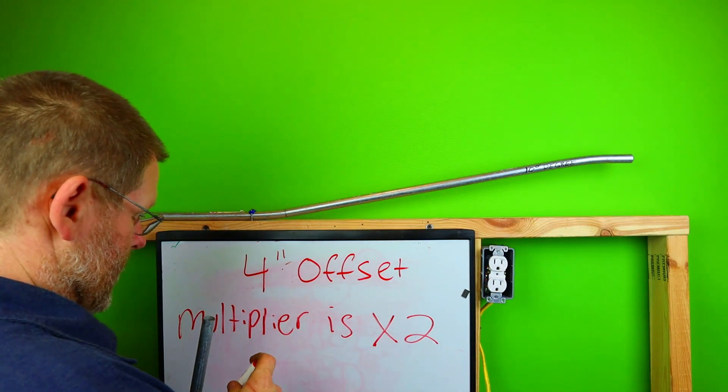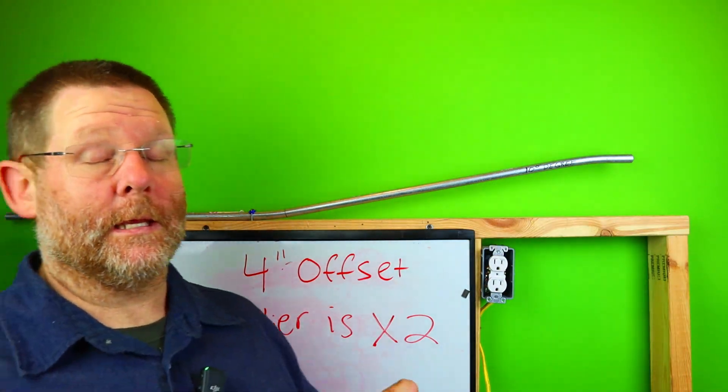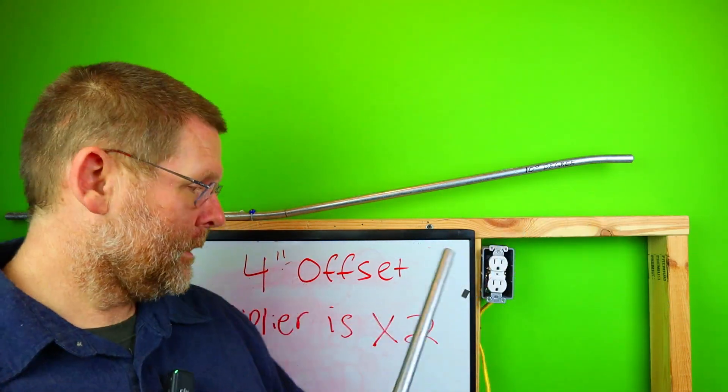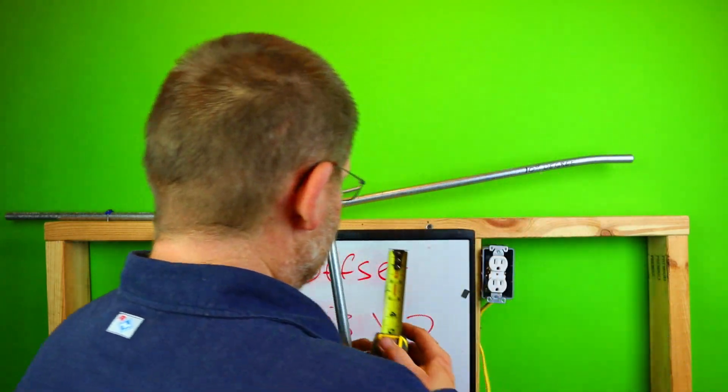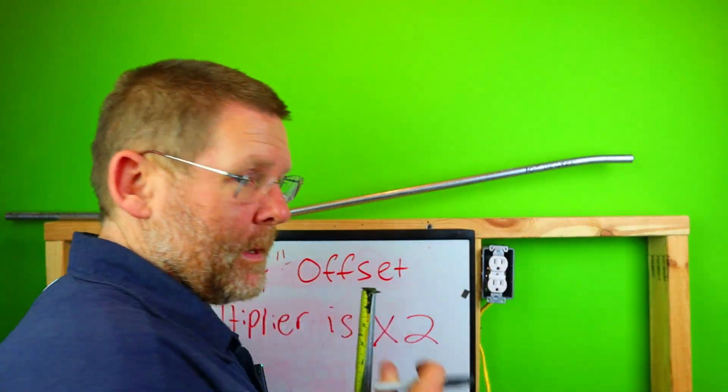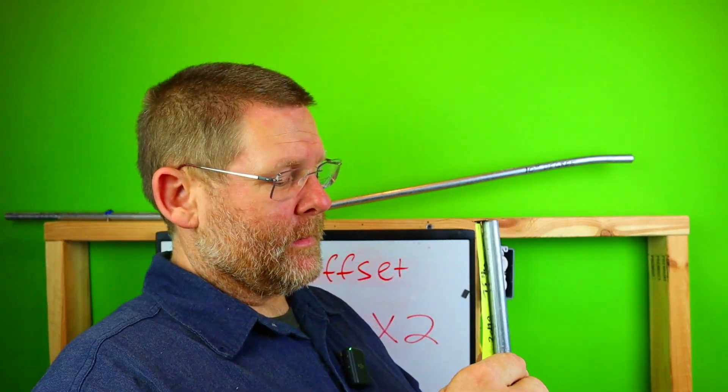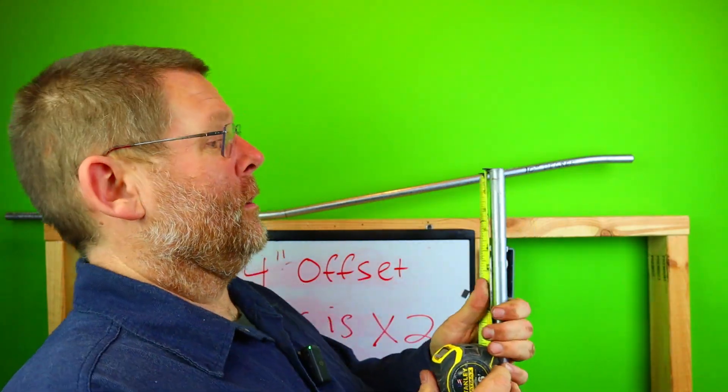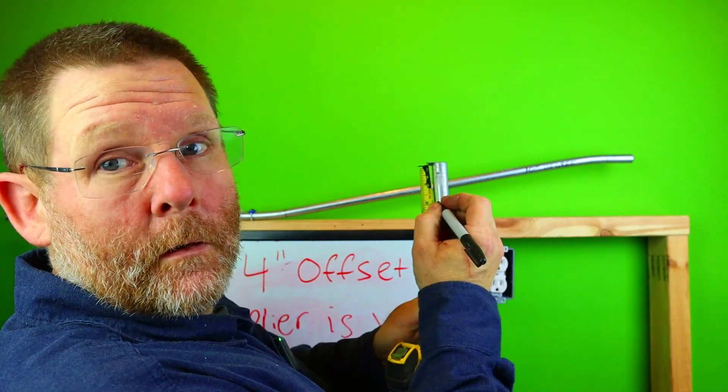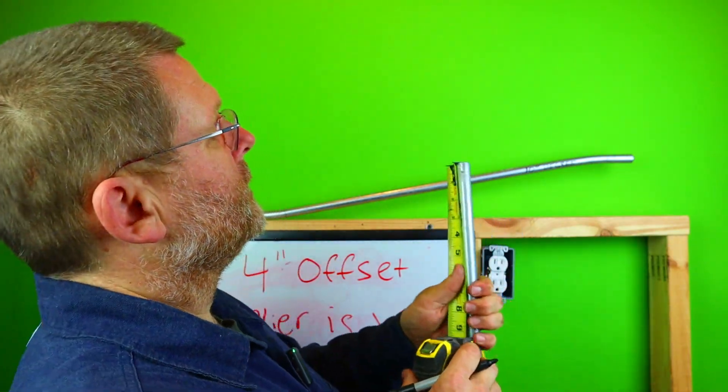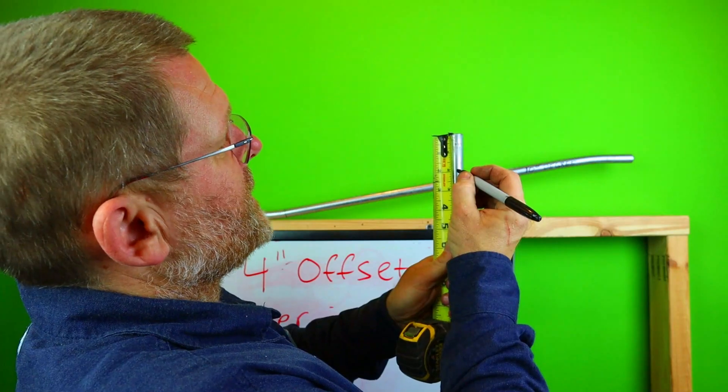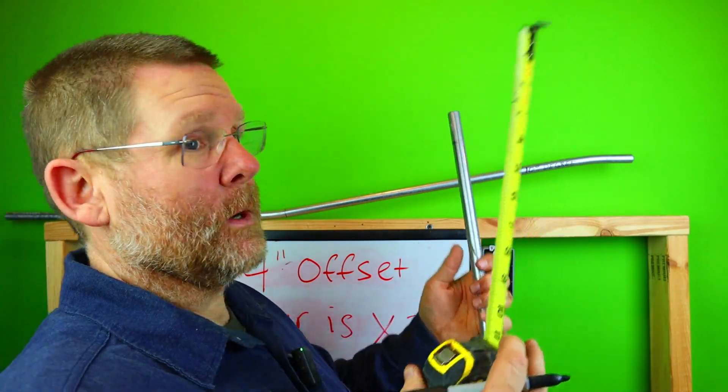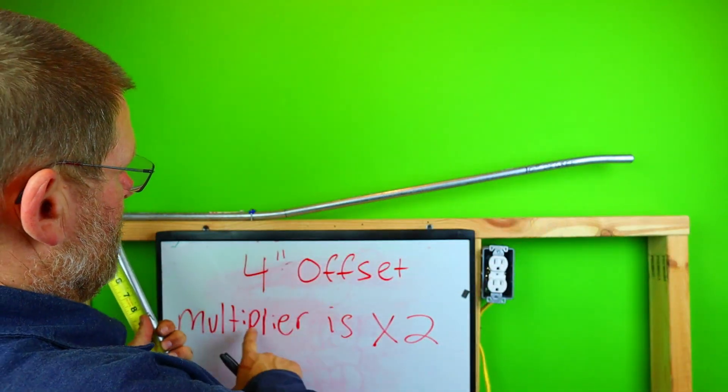So we know we need a 4-inch offset. 4 times 2 is 8. Can you remember back to last week when we saw the 22-degree bend? How much space was between the bends? While you're thinking about that, I'm gonna mark my first mark. Remember how far I come back on this pipe? I always come back two inches.